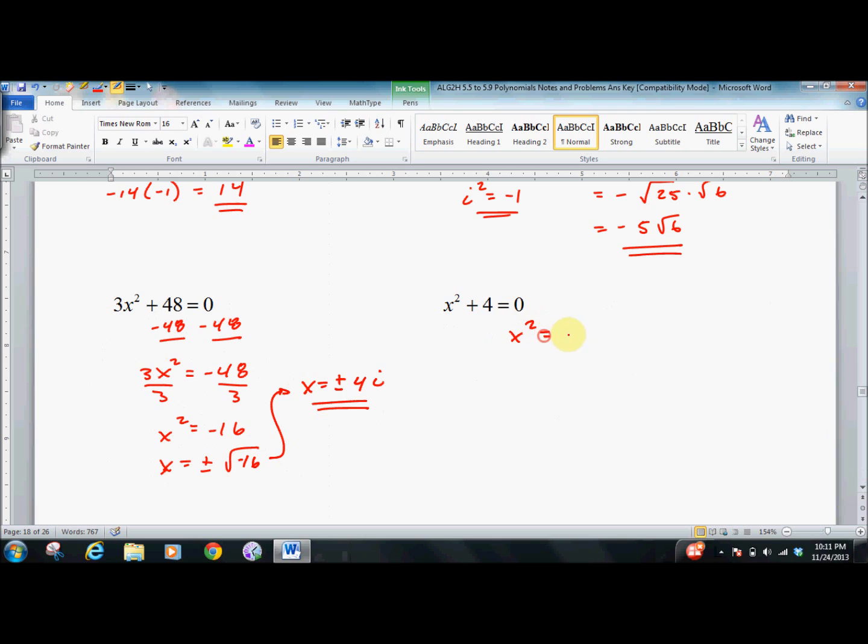Same thing over here. X squared equals negative 4. Square root of both sides. X equals plus or minus 2i. If we're getting used to working with imaginary numbers, it's really not that difficult. Just a slightly different frame of mind.